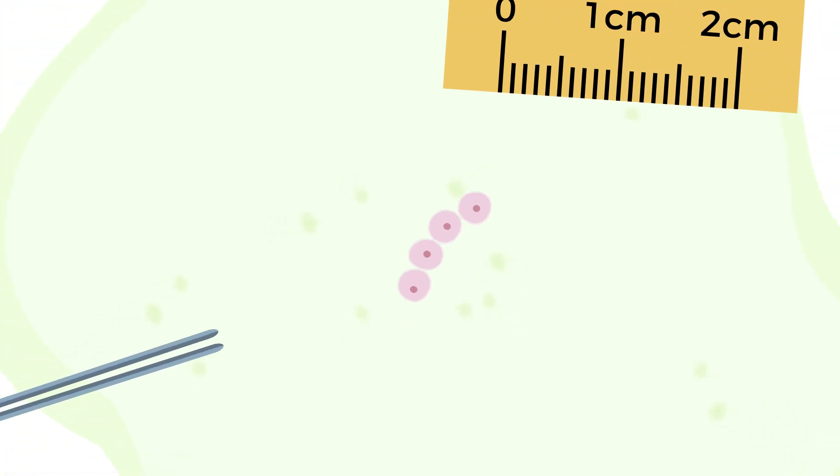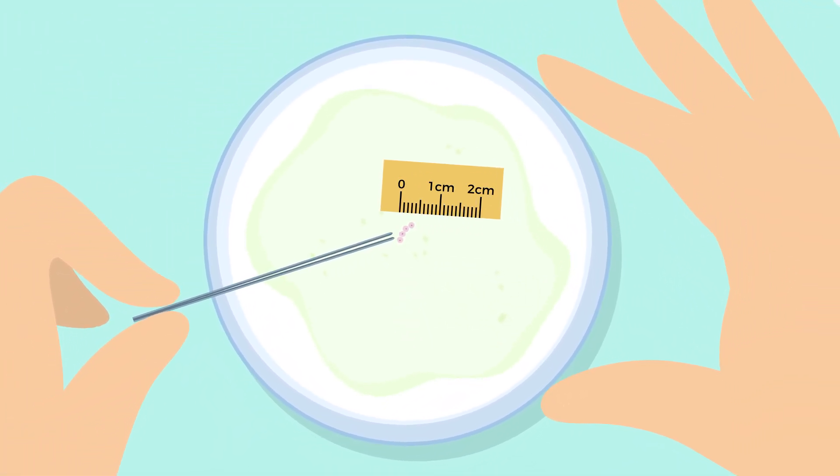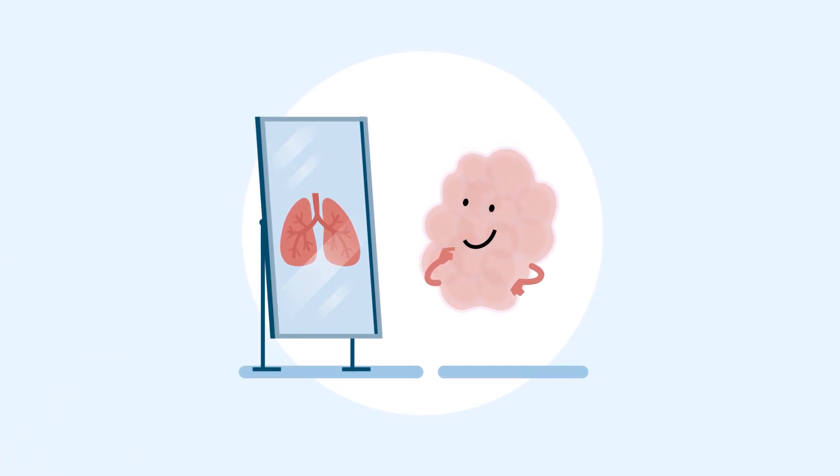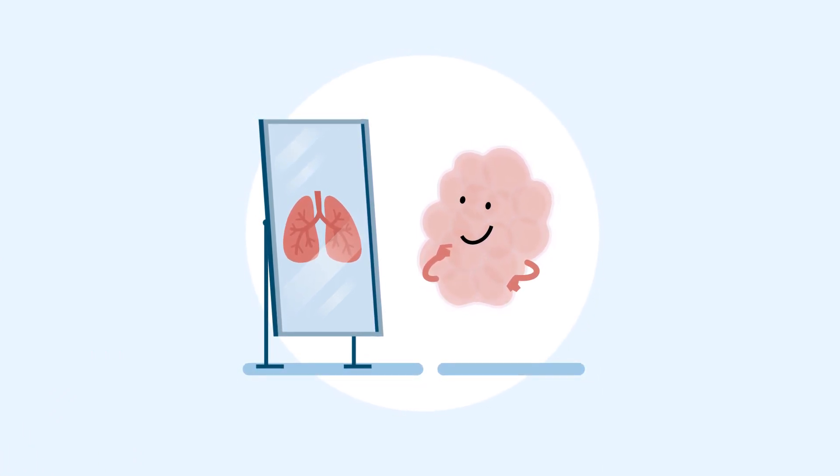Organoids are very small clusters of living cells that are about one to two millimeters in size. You can barely see them with the naked eye. They contain many of the same characteristics as real organs, as they're made from the same material.